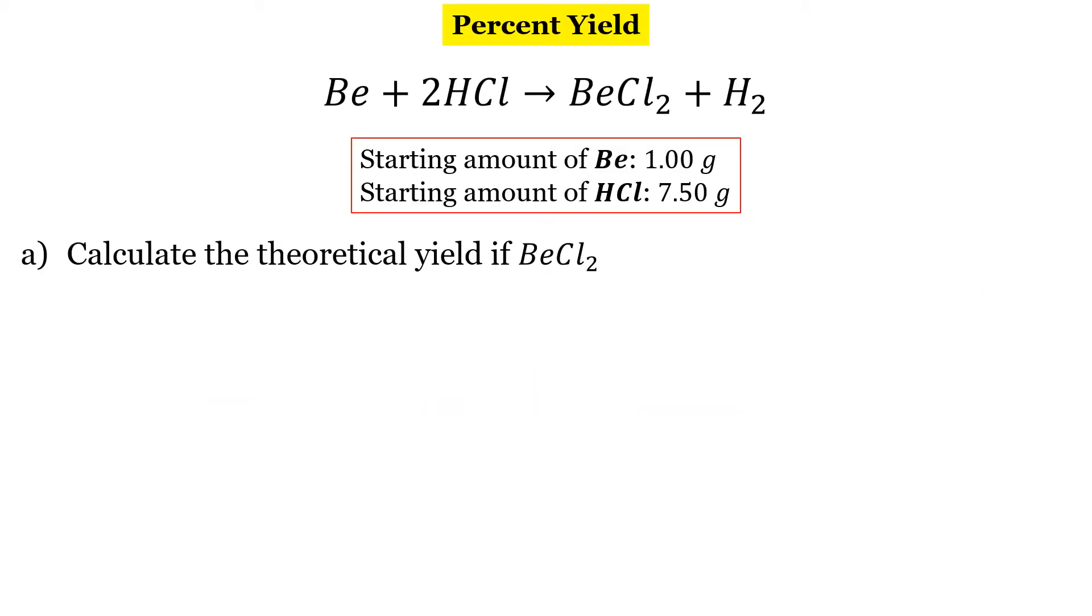Here is a chemical reaction. I've got a starting amount of both, and we want to calculate the theoretical yield. So this is already something we know how to do. Let's begin with the beryllium first.